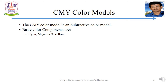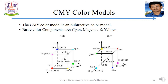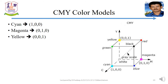The CMY color model is a subtractive color model. The basic color components are cyan, magenta, and yellow. It is similar to the RGB color model, but here (0, 0, 0) represents white and (1, 1, 1) represents black. Cyan is represented as (1, 0, 0), magenta as (0, 1, 0), and yellow as (0, 0, 1).